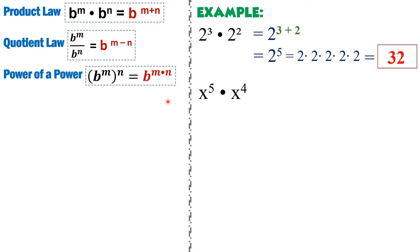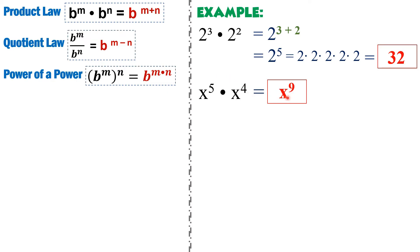Another example: we have x raised to 5 times x raised to 4. As you can see, they have the same base. Therefore, we keep the base and add their exponents. 5 plus 4 gives us 9, so the answer is x raised to 9.